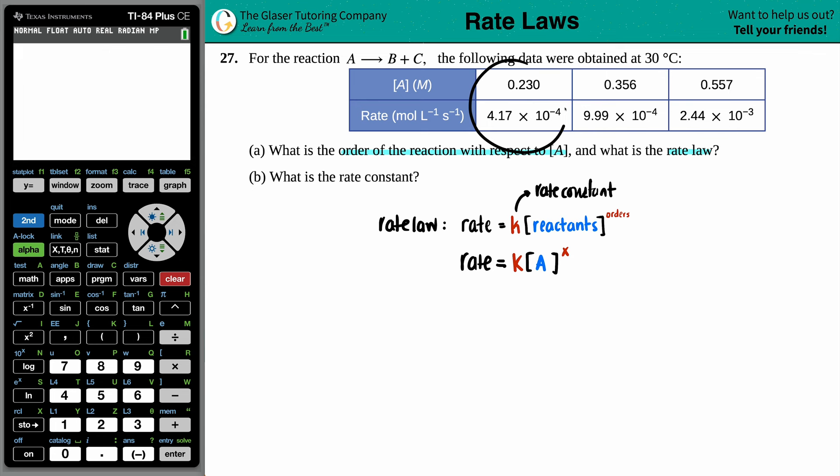But we need to find that order, which means that we don't know what it is now. So I'm just going to label it as X. You could label it as any value that you want. But now what we're going to do is we're going to use the tables to find out what that X value is. And to do that, just know that for every concentration and rate value, these are different trials or different experiments. So we have trial one with this concentration and this rate, trial two with that concentration and that rate, and then trial three.